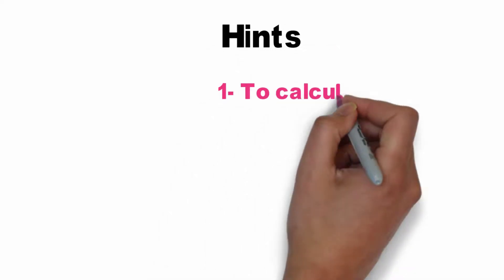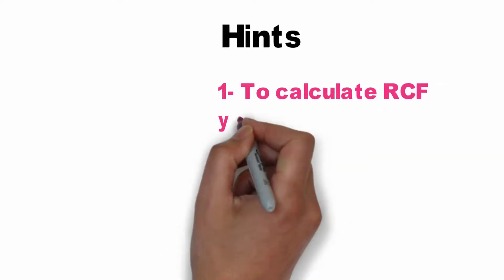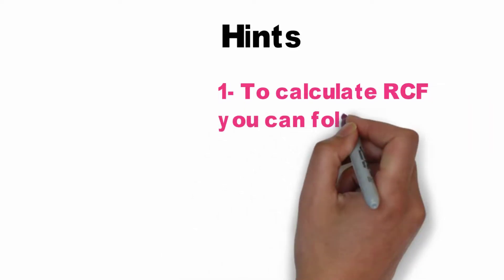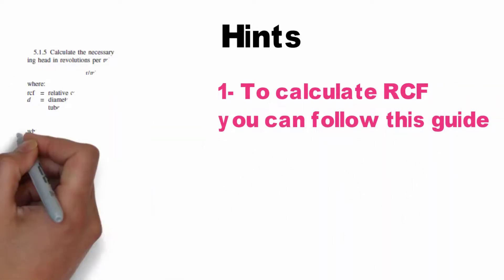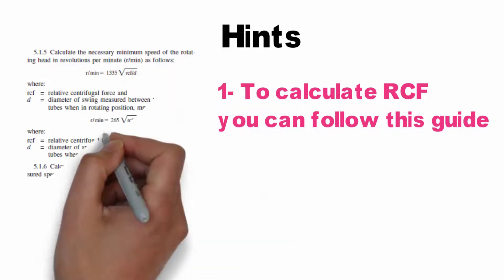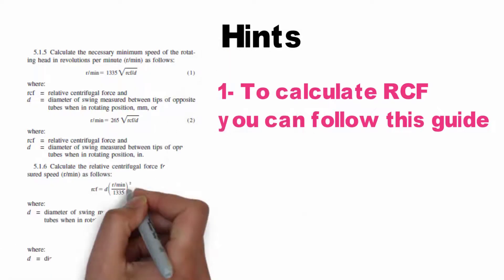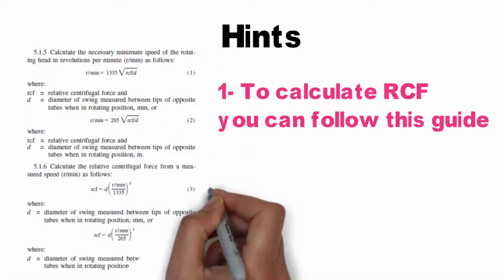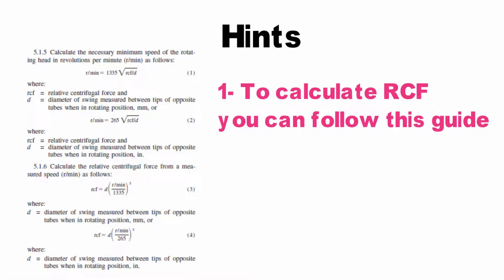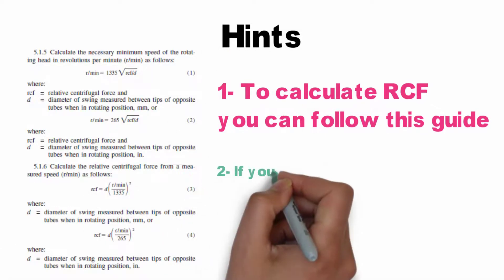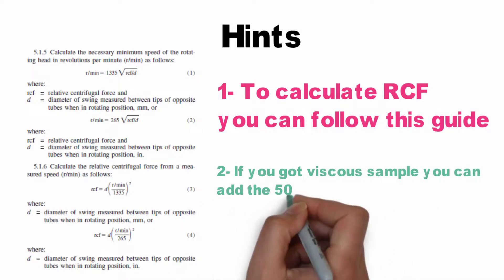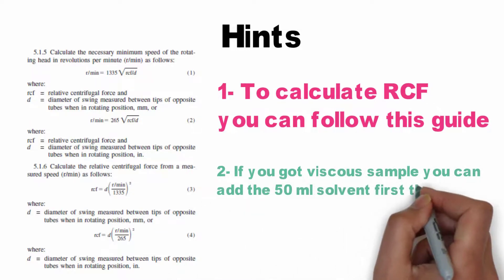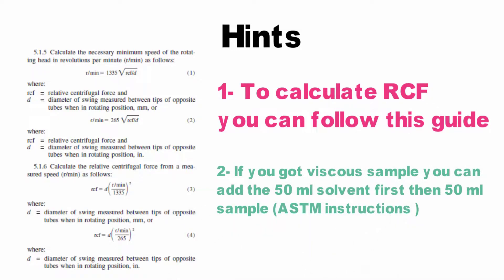Here are some hints. To calculate the relative centrifuge force, you can follow the provided guide. If you have a viscous sample, you can add the 50 ml of solvent first, then 50 ml of sample, as mentioned in the ASTM standard.